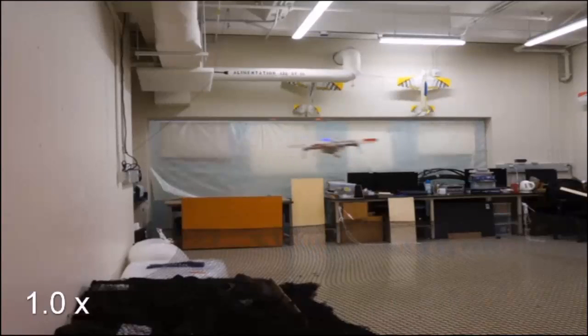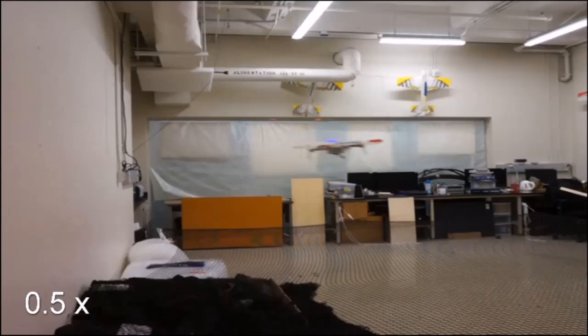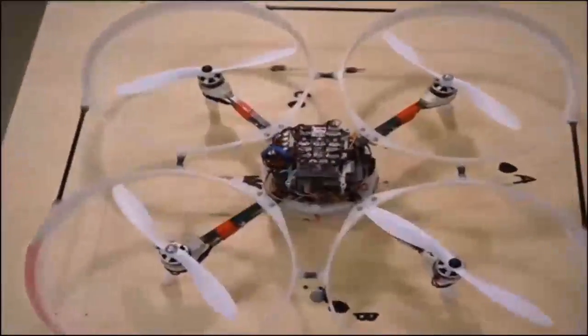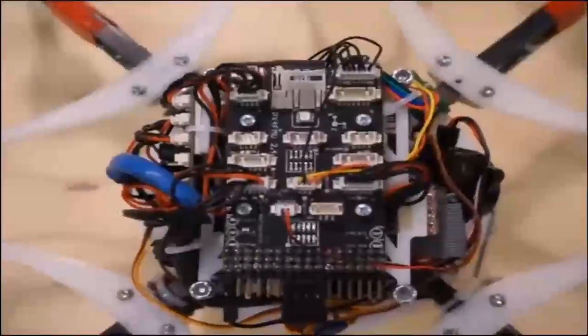In this video, we demonstrate a method for recovering from collisions between a propeller-protected quadrotor and a vertical wall. This recovery strategy requires only IMU and barometer onboard sensing, which is available on the majority of commercial platforms.